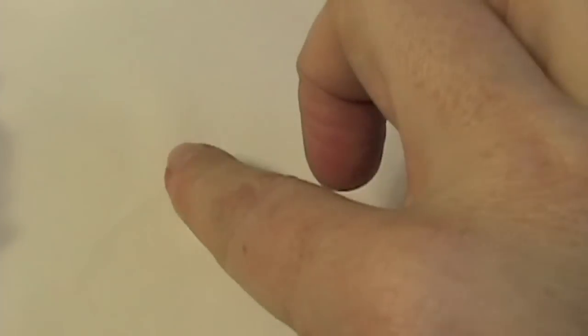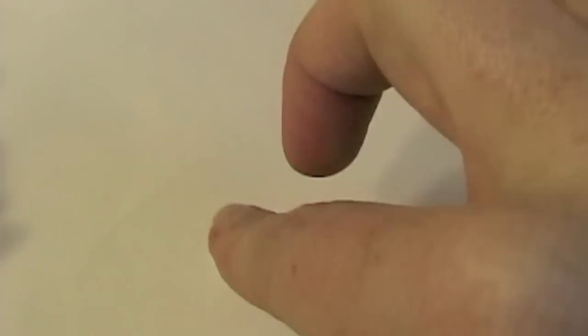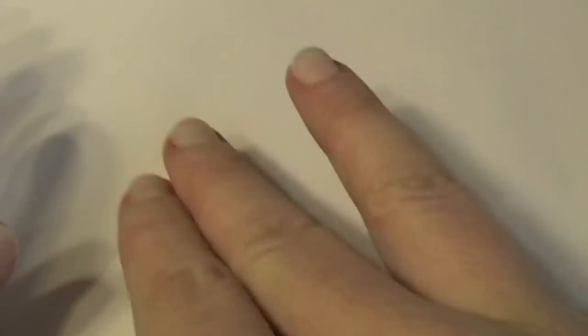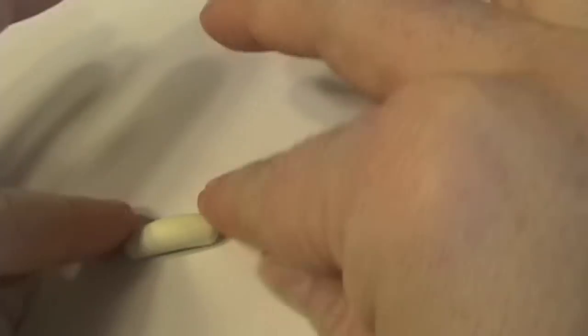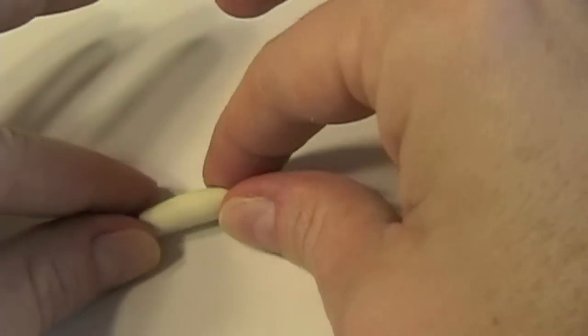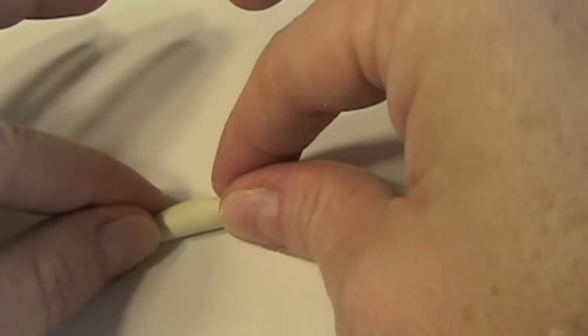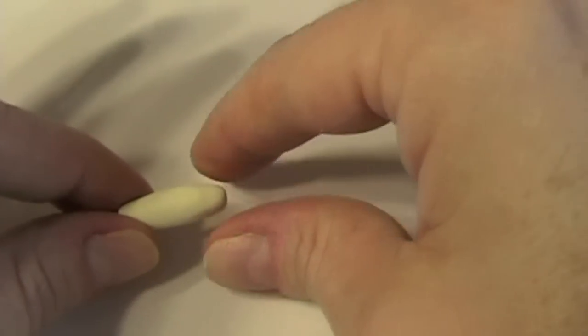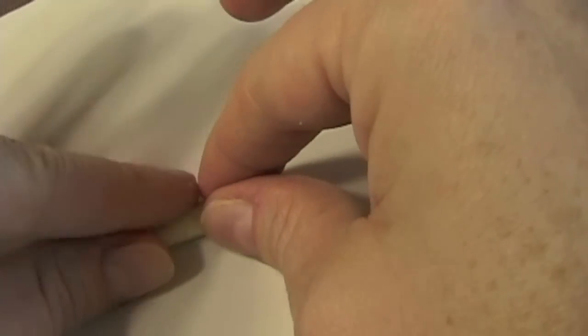Then you need to roll it into a short little cane. You want to taper the ends so they are just a little thinner than the center, and you want to flatten it slightly.